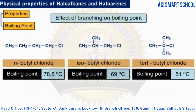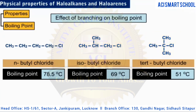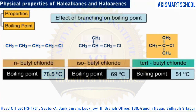The boiling points of isomeric haloalkanes decrease with an increase in branching. This is because with increased branching, the molecule attains a more spherical shape with less surface area. This results in a decrease in the magnitude of van der Waals forces and hence a decrease in boiling point. Thus, among the isomeric butyl chlorides, the straight-chain isomer n-butyl chloride has the highest boiling point, while tertiary butyl chloride has the lowest.